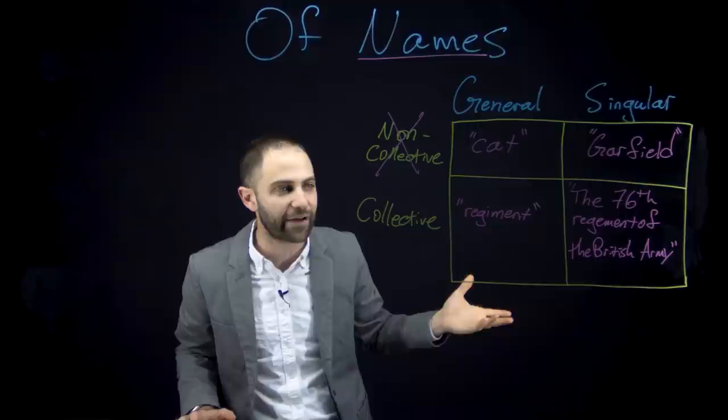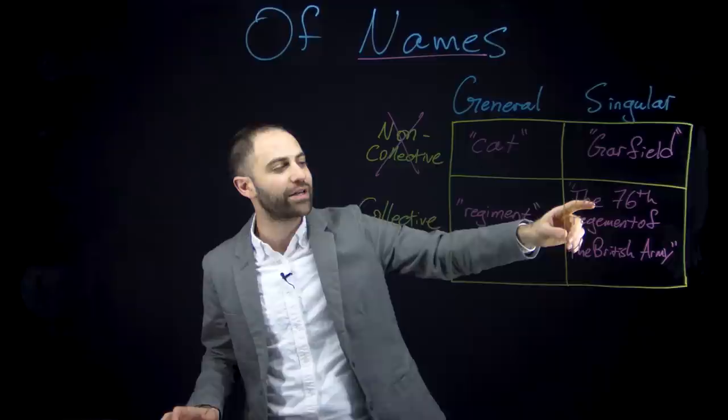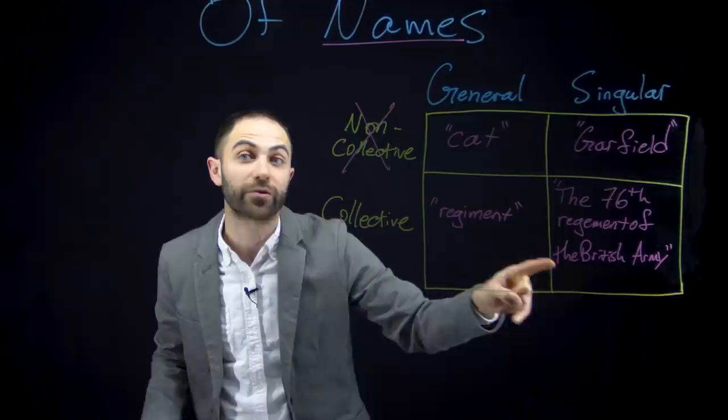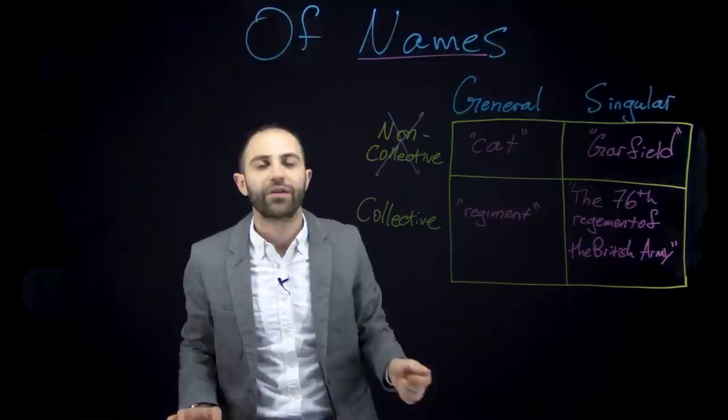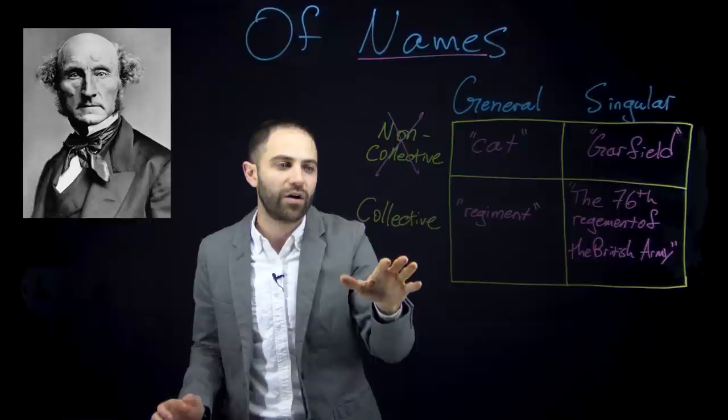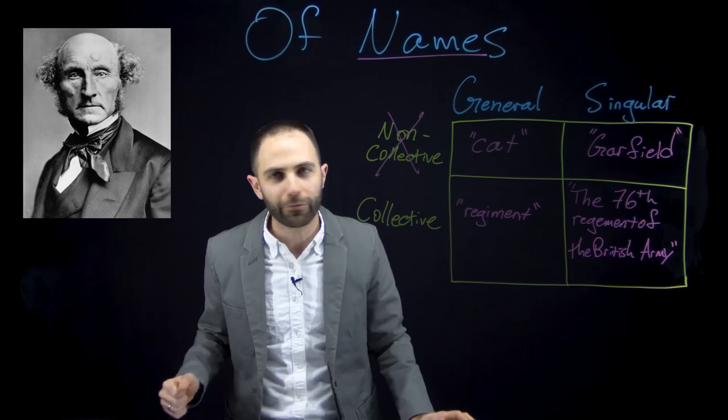We can see why Mill wanted to introduce the notion of a collective name anyway: he wanted to make the point that even a name like 'the 76th Regiment of the British Army,' which in some sense is of a group, is still a singular name because you can only use it for that one thing, whereas 'regiment' can be applied to all sorts of things. But we can make that point without introducing this confusion. Mill is genuinely confused when he introduces the notion of a collective name — but he was right about a lot of other things, so he's still good.